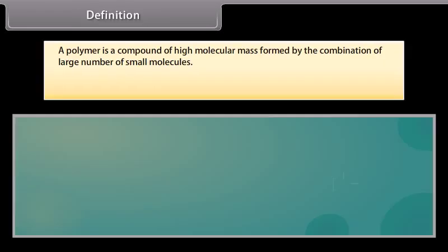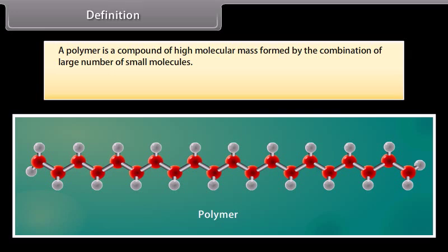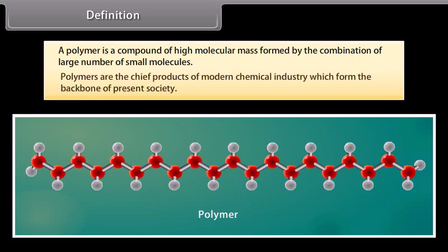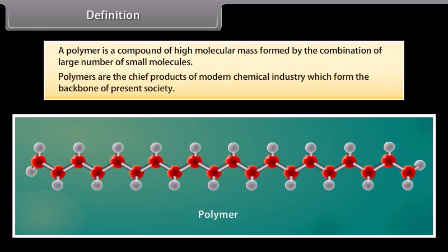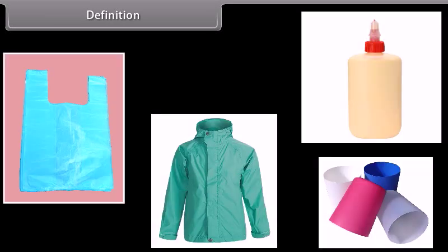A polymer is a compound of high molecular mass formed by the combination of large number of small molecules. Polymers are the chief products of modern chemical industry which form the backbone of present society. In our everyday life, we use materials like plastic dishes, cups, automobile tires and seat covers, plastic bags, rain coats, radio, TV and computer cabinets. Wide range of synthetic fibers, synthetic glues, flooring materials, and materials of biomedical and surgical operations are based on polymers.